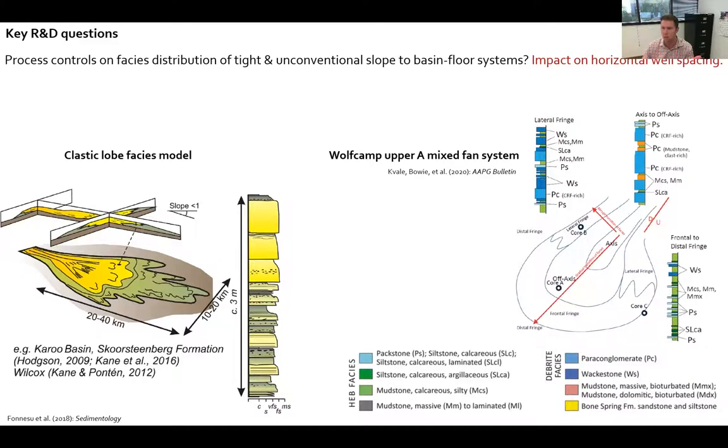Like the Paleogene section in the Gulf of Mexico, in the Deepwater Gulf of Mexico. And then on the right, you see another heterogeneity scenario, similar sized units, similar geometry of deposit, but the distribution of facies is very different in this unconventional unit of the Wolfcamp from the northern Delaware Basin, published recently by our colleagues at Devon.